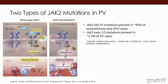There are two types of JAK2 mutations in PV. In about 95% of patients, the JAK2 mutation is called the JAK2V617F mutation. This activates the JAK-STAT pathway without the need for a growth factor to attach to receptors — it is always active.